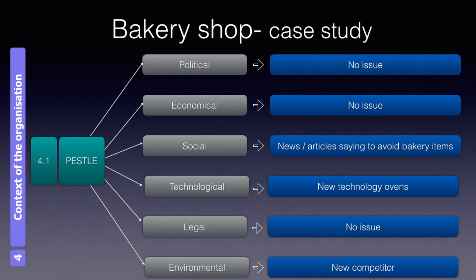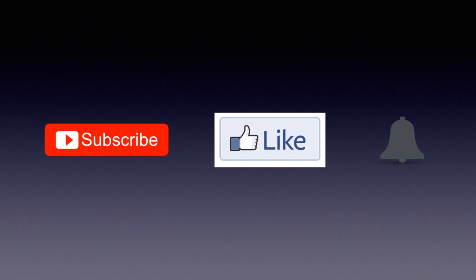Technological issues such as changes in oven technology did affect them, so they considered this an issue. Legal issues such as changes in taxation or foreign exchange policies didn't affect their QMS. For environmental issues, they found no recurring natural disasters. However, in the business environment, they identified a new and larger competitor nearby — the biggest issue for their QMS. Information about internal and external issues must be monitored, ideally through management review as per clause 9.3.